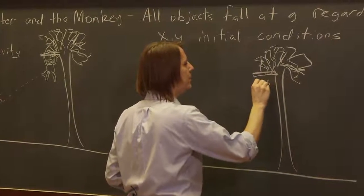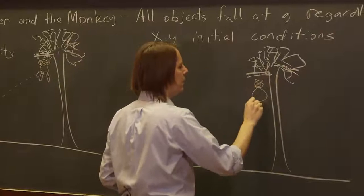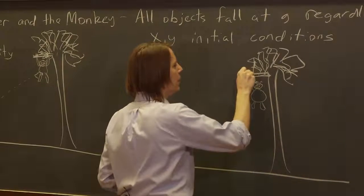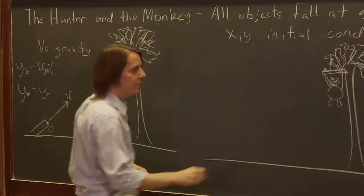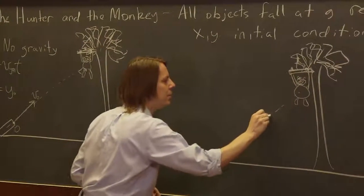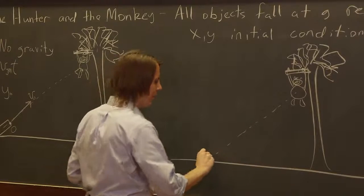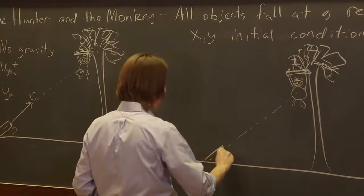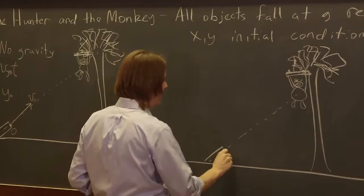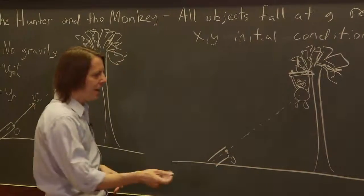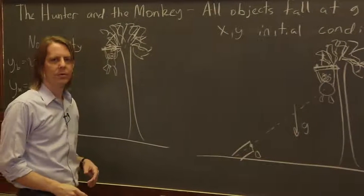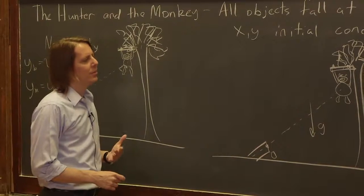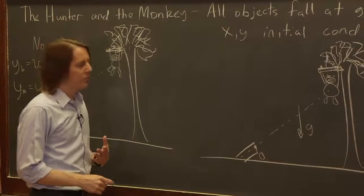And it still has a branch here, and there is still a monkey hanging from the tree. Here he is. He's a little bigger and he's holding on like that. The monkey's still there. The hunter is still aimed directly at the monkey. So the hunter's gun is still like this, and we're still going to call that the origin. But now everything falls down with g.